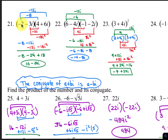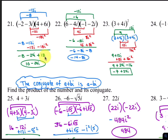For number 21, distribute again. Negative 2 times 4, negative 2 times 6i, negative 3i times 4, and negative 3i times positive 6i. The result is negative 8 minus 12i minus 12i minus 18i squared. That results in negative 8 minus 24i plus 18. Negative 8 plus 18 is 10, so your answer is 10 minus 24i.